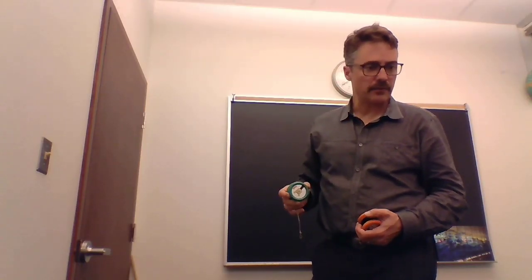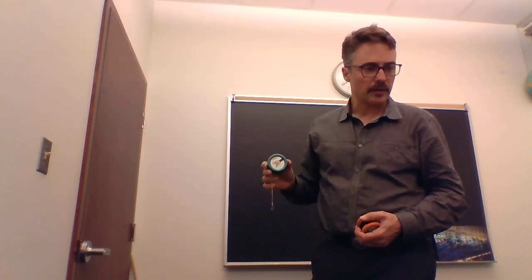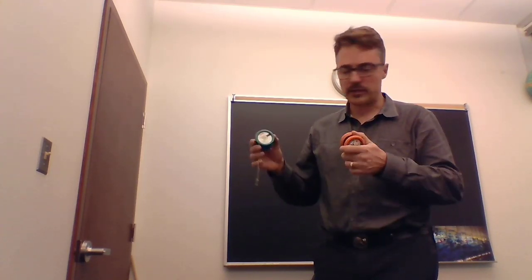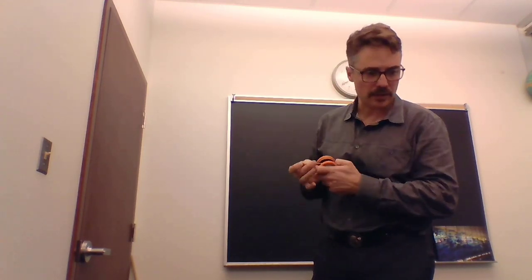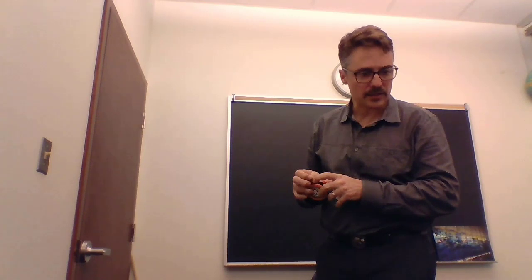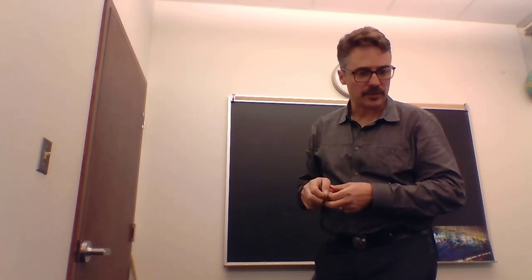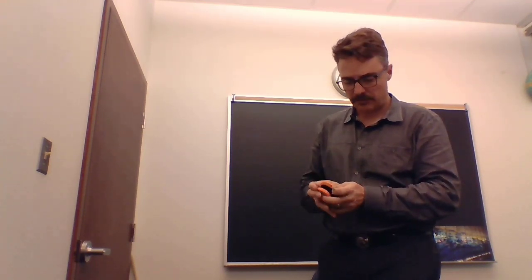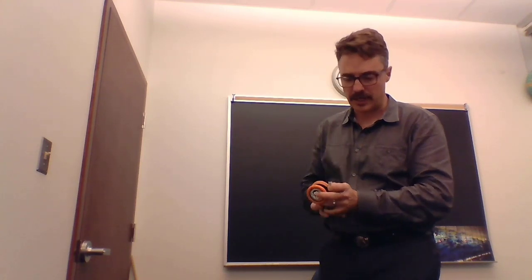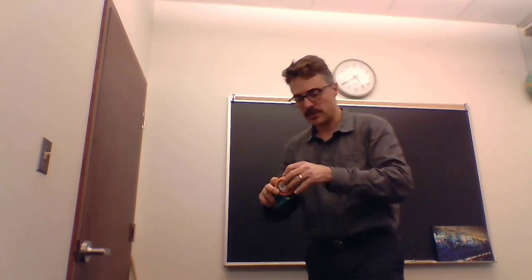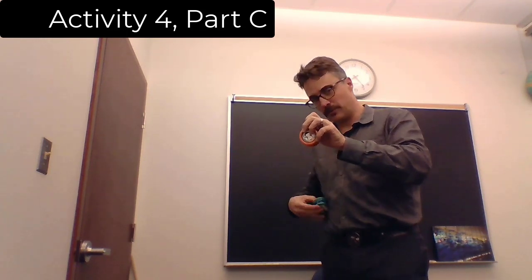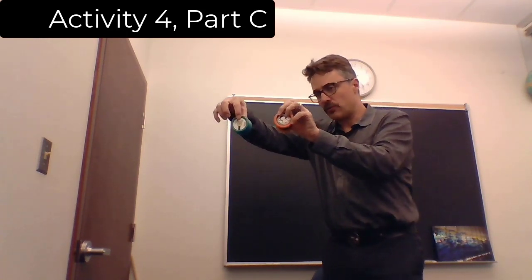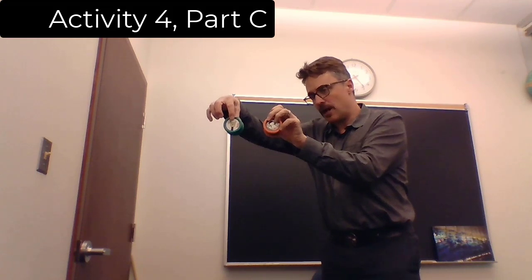So in Activity 4, parts A and B are talking about a yo-yo that's dropping either with free fall or with the string attached to it. And in part C, it says, if two objects are released from the same height, both from rest, do they fall at the same rate? So idea with this is we hold the string for one, we don't hold the string for the other, and we drop them at the same time and see how fast they fall.